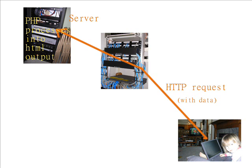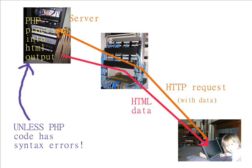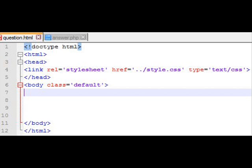The data goes through the internet and gets to the server. At that point the server uses a language such as PHP to process that request, does all the computing there at the server, and then makes the HTML output and sends it back to the client. That happens unless PHP has syntax errors — a missing quote, missing exclamation point, or whatever. Then it has nothing to send, and that's when we get what we affectionately know as the white screen of death.